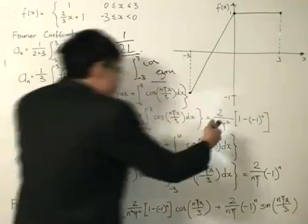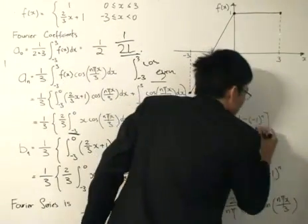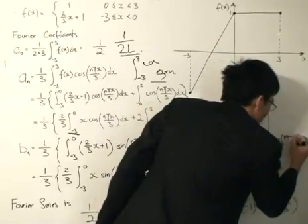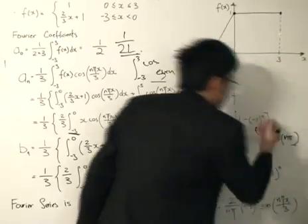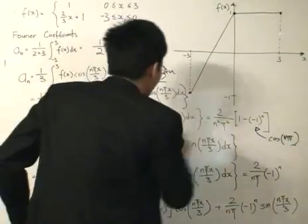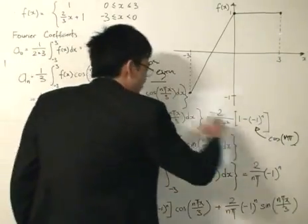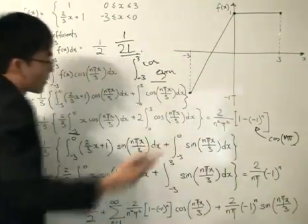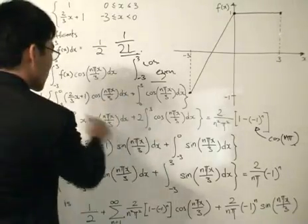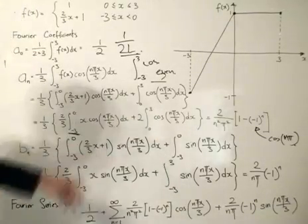So this stays as it is. Then you do the integration, and as we know, this is going to equal cosine nπ, and cosine nπ is equal to minus 1 to the power of n. Why is it nπ? Because if we substitute 3 inside, we eliminate the 3 at the bottom. So the result gives us cosine nπ, which equals (−1)^n.